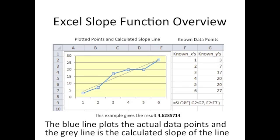The data ranging from cells F1 to G7 shows the x and y points that the graph is based on. Cell range F2 to F7 shows the known x points, and cell range G2 to G7 shows the known y points. The blue line on the graph plots the x and y points.